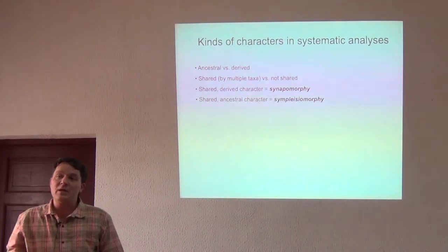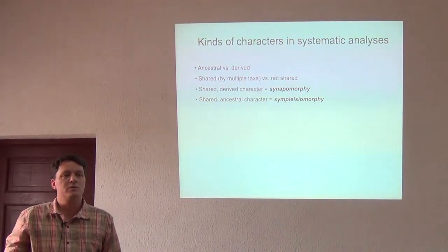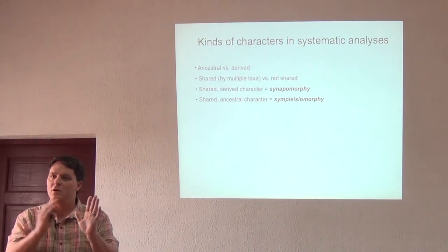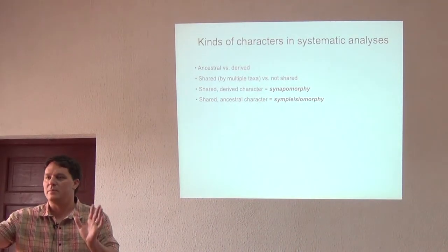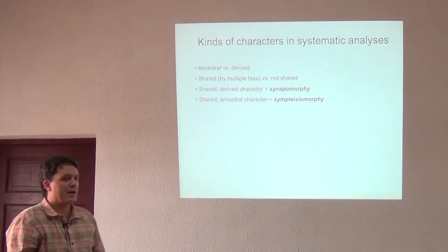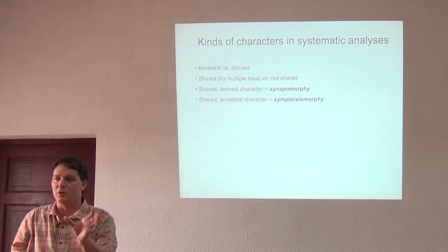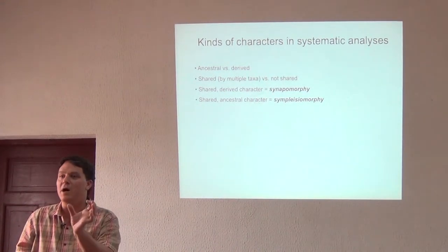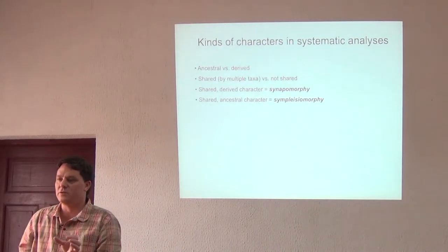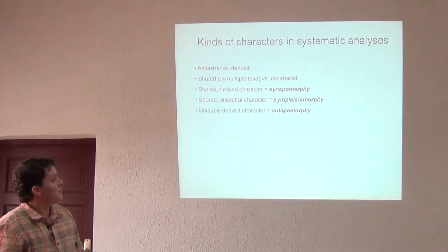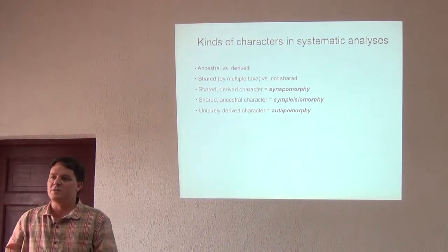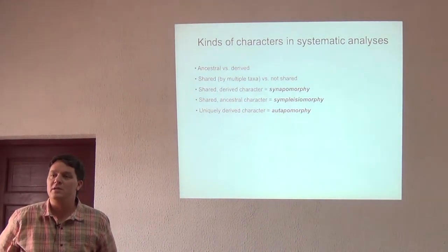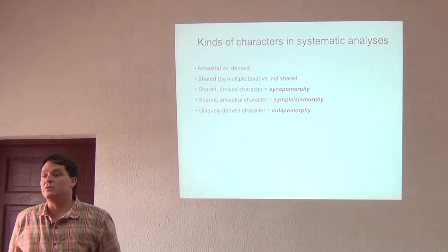We have things that are shared ancestral characters, which are characters you might see in multiple taxa but they come from so deep in the evolutionary tree that all the other things in that group have them as well. So with respect to the clade that represents birds, feathers might be viewed as a shared ancestral character, because all modern birds have feathers. And then the other kind of character is autapomorphy — uniquely derived characters that are only seen in one species.